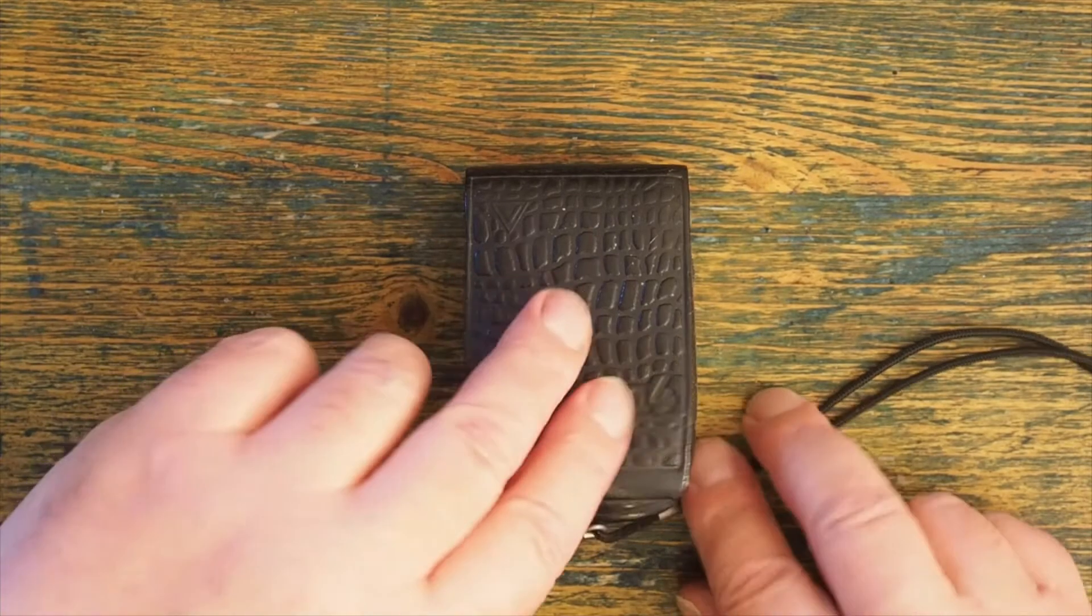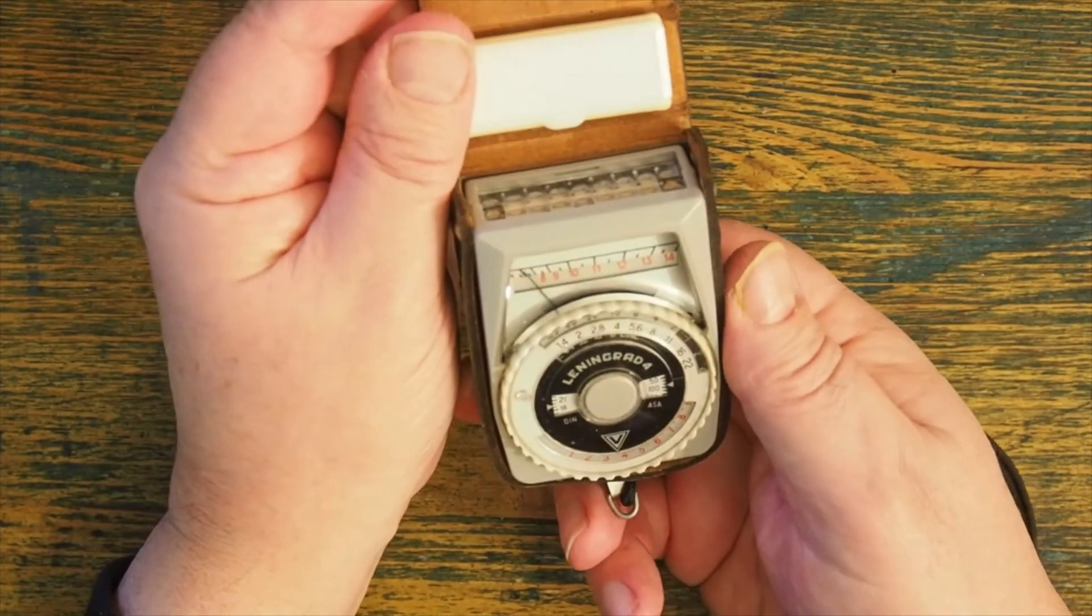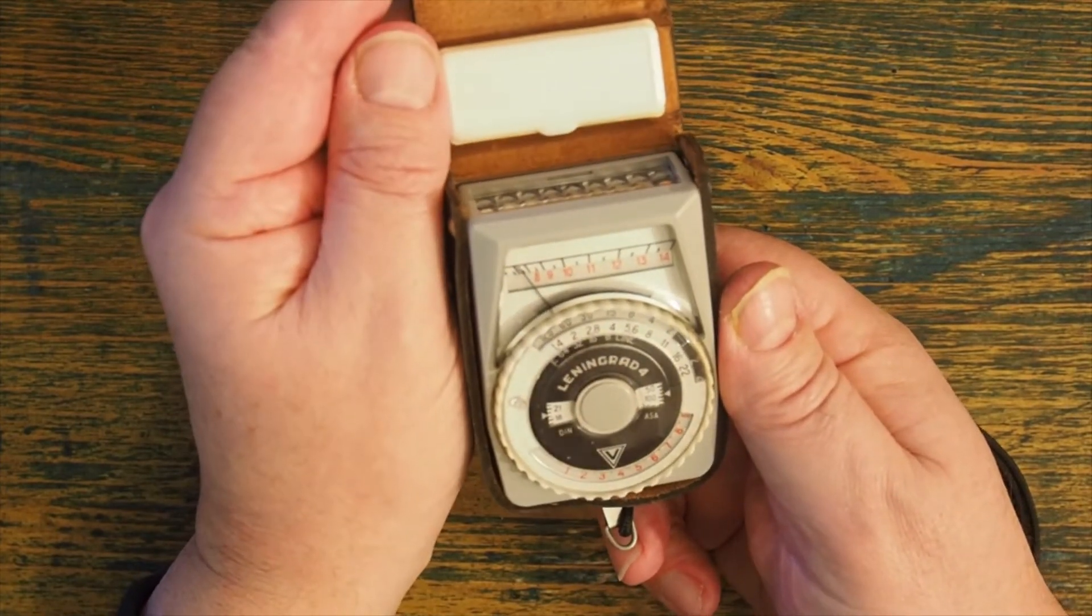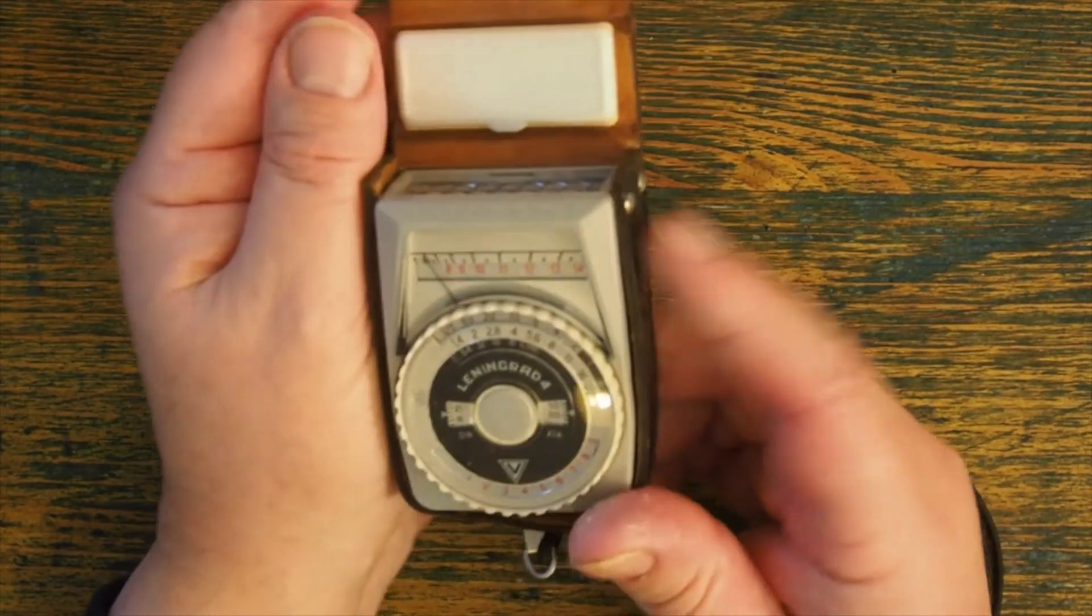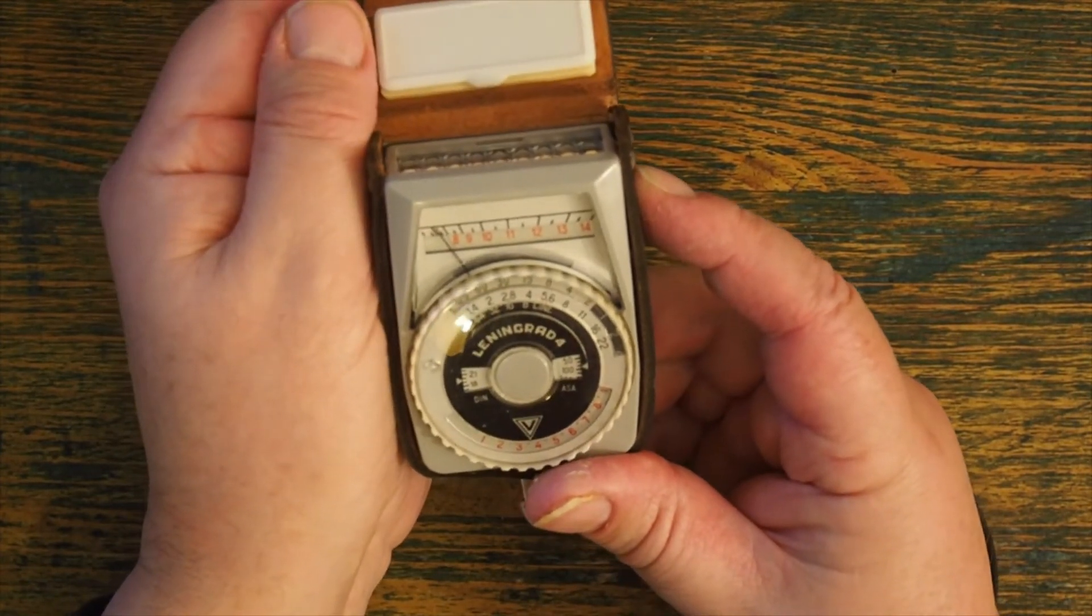This is the Leningrad 4 selenium exposure meter. First one I had one of these was about 1978-1979 when I had a Lubitel 2 twin lens reflex camera which obviously didn't have a meter, otherwise I wouldn't have bothered.